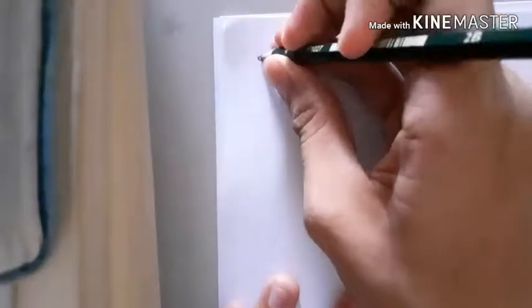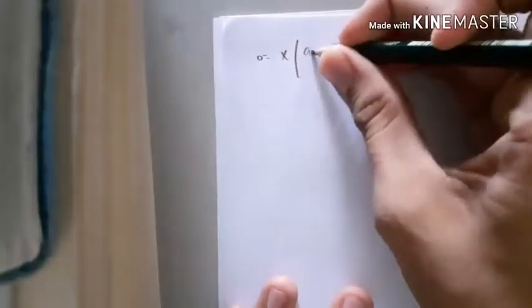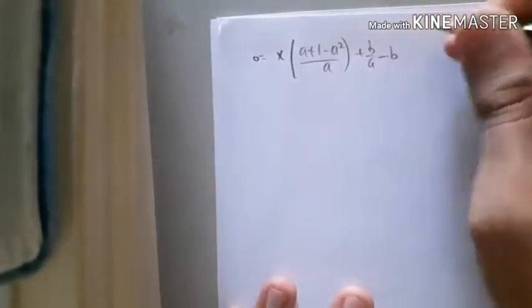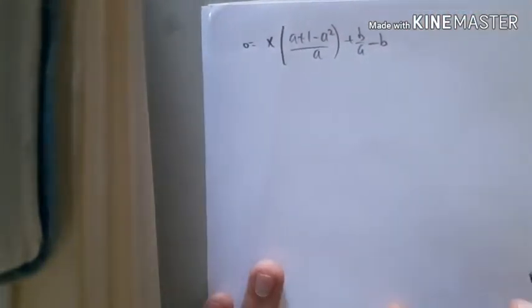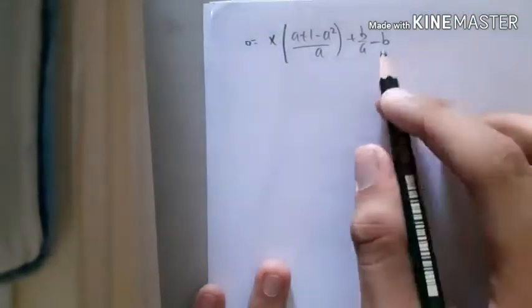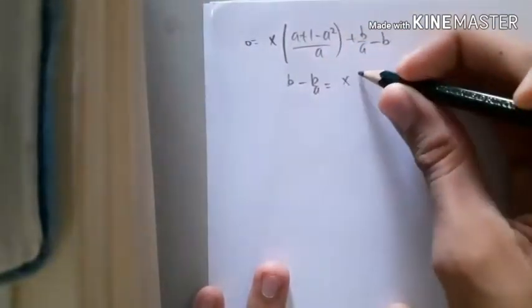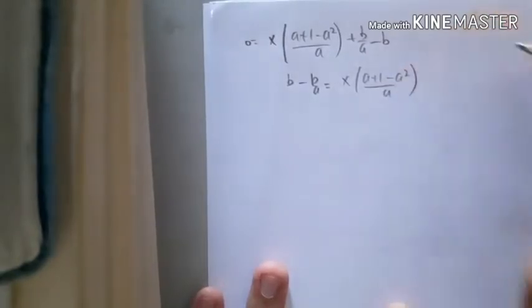Yes, now we have got the answer. That is 0 equals x of (a+1-a²)/a plus b/a minus b, right? So we can move it to there. So b - b/a equals x of (a+1-a²)/a.